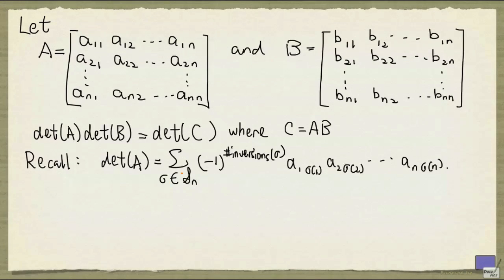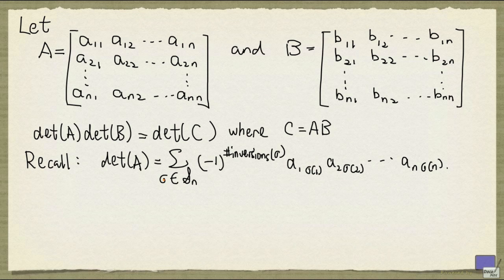In this definition, this sum involves n factorial terms because there are exactly n factorial permutations over n symbols. We'll now work with the determinant of C and try to turn it into the product of determinant of A and determinant of B.